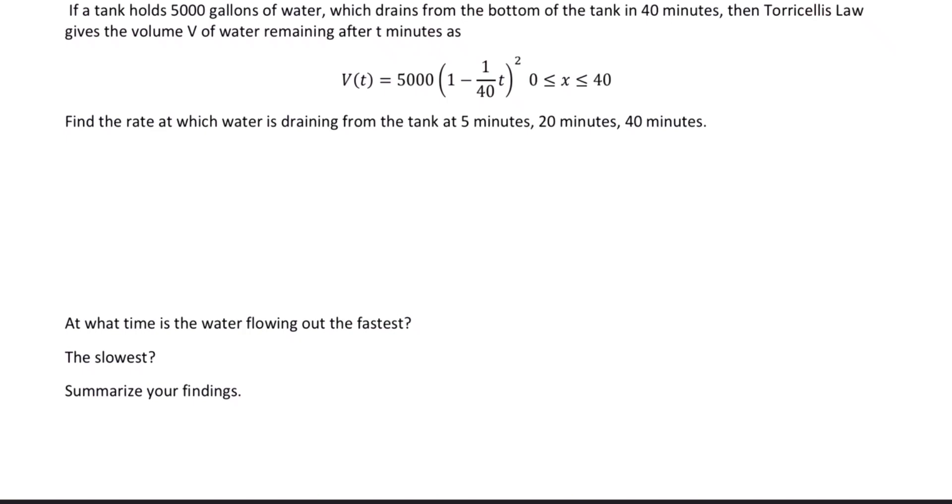If a tank holds 5,000 gallons of water, which drains from the bottom of the tank in 40 minutes, then Torricelli's law gives the volume V of water remaining after t minutes as the following function. Find the rate at which the water is draining from the tank at 5 minutes, 20 minutes, and 40 minutes.